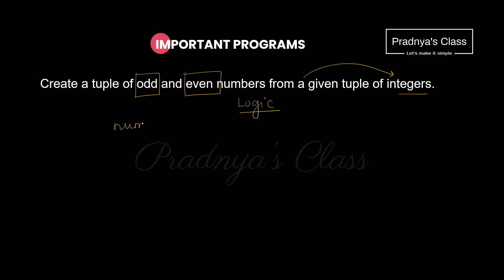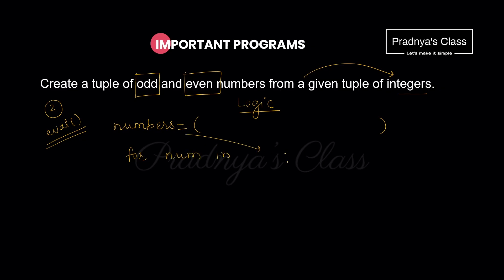First of all, let's take one tuple — I am giving it the name 'numbers'; you can give a variable name of your choice. Initialize some numbers to it. You know we can give values to the variable in two ways: one by initialization like this, or by taking input. If you want to take input of the tuple elements, you will be using the eval function — it's just like list. The next task is to iterate over the tuple; for that we can use a for loop. Let's take one variable 'num' which will iterate over this tuple. We have to segregate even and odd numbers.